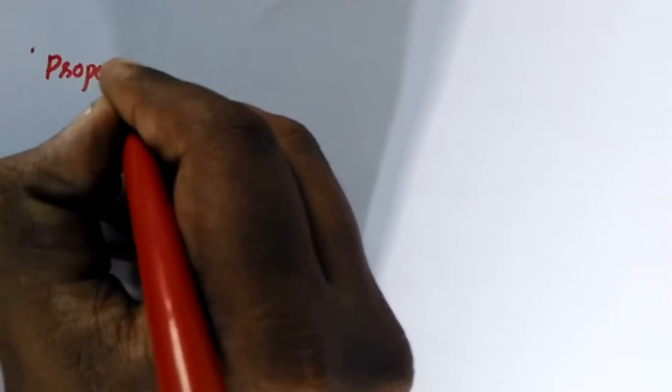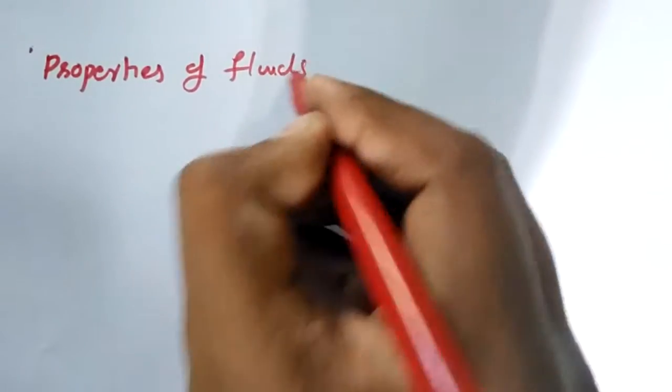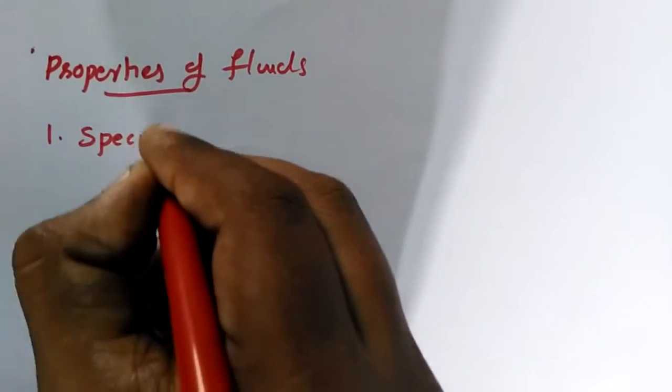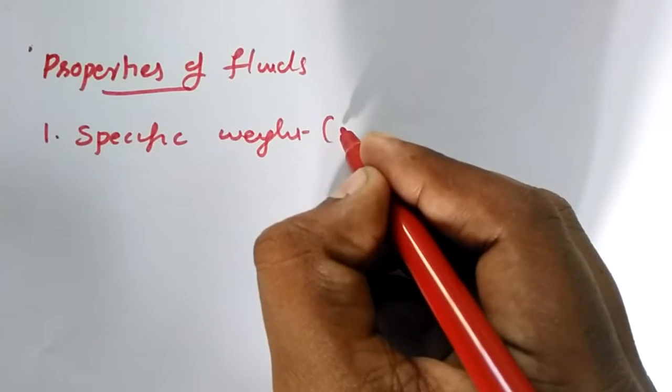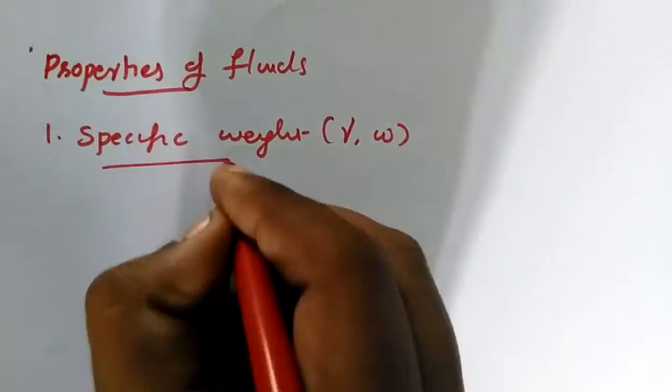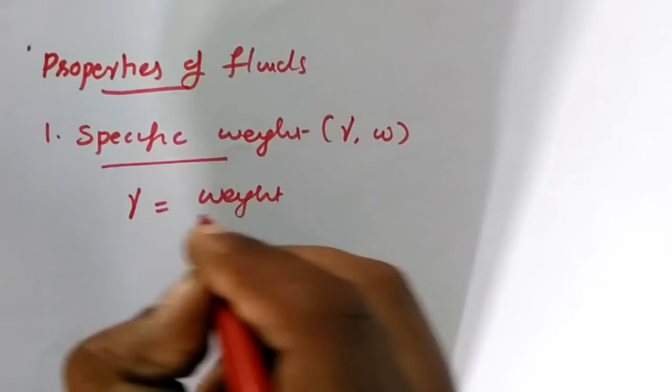In this lecture we are going to cover the properties of fluids. The first property is specific weight. We will denote it as gamma or small w. Specific weight gamma is weight by volume.